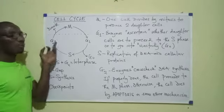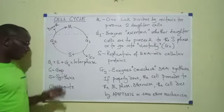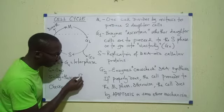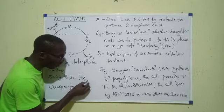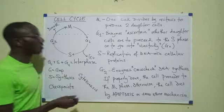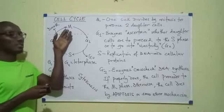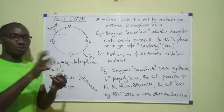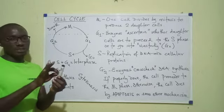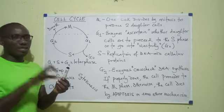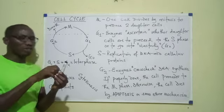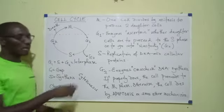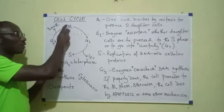Then M here stands for mitosis — but it's not just mitosis, it is mitosis and cytokinesis. Mitosis has to do with the splitting of the nucleus of the cell. The nucleus of the cell that is going to become two new cells has to split, and then the cytoplasm too will split. The process of the nucleus splitting is mitosis, and the cytoplasm splitting is cytokinesis. Those two occur together in the M phase.